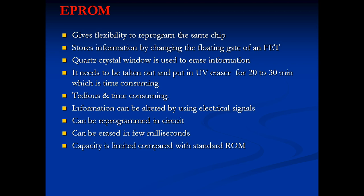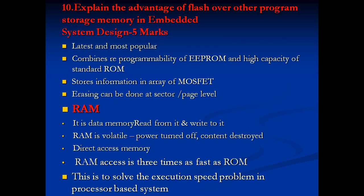EPROM stores information by changing the floating gate of the FET, and a quartz crystal (UV light) is used to erase contents. The chip needs to be taken out and placed in a UV eraser for 20 to 30 minutes, which is time-consuming. EEPROM can be reprogrammed in-circuit and erased in a few milliseconds using electrical signals, but its capacity is limited compared to standard ROM.